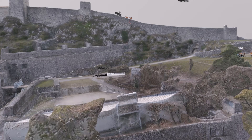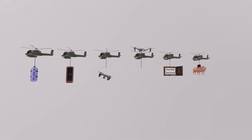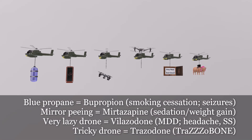Now let's talk about the atypical antidepressants. Bupropion is represented by the blue propane tank. Bupropion inhibits norepinephrine and dopamine reuptake. It's used not only for depression but also for smoking cessation. Patients with seizures should not take it as it can cause seizures, especially in patients with bulimia or anorexia nervosa. Next, the mirror that is peeing — mirror peeing for mirtazapine. Mirtazapine is an alpha-2 antagonist, and toxicity includes sedation and weight gain, which may even be favorable in some patients.